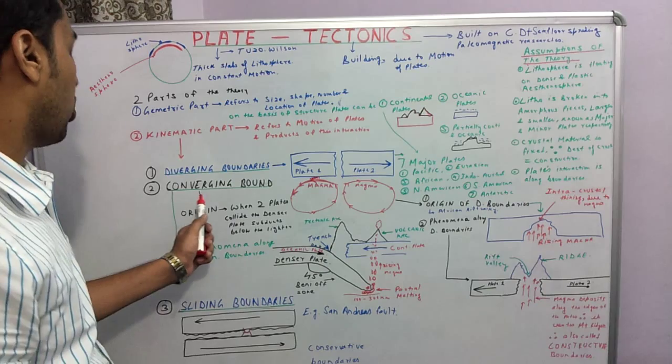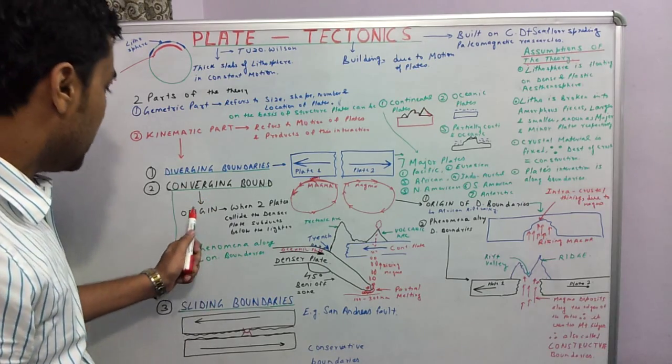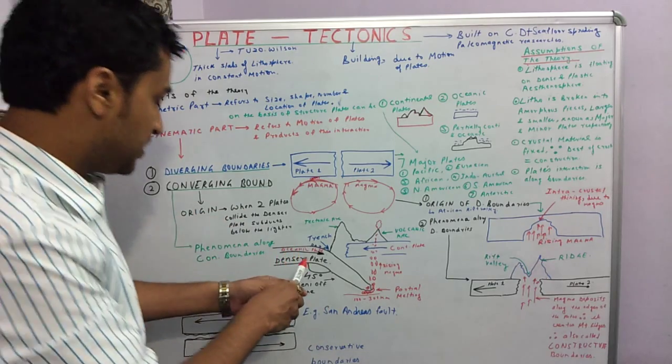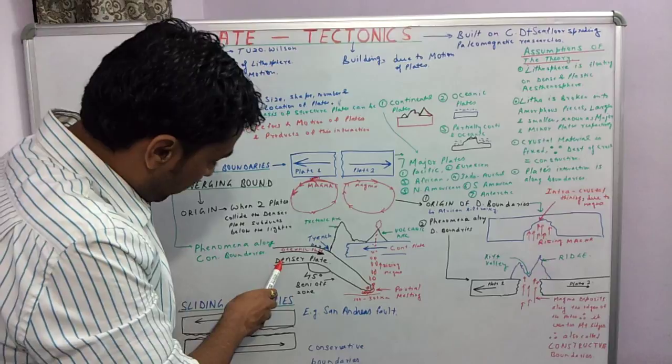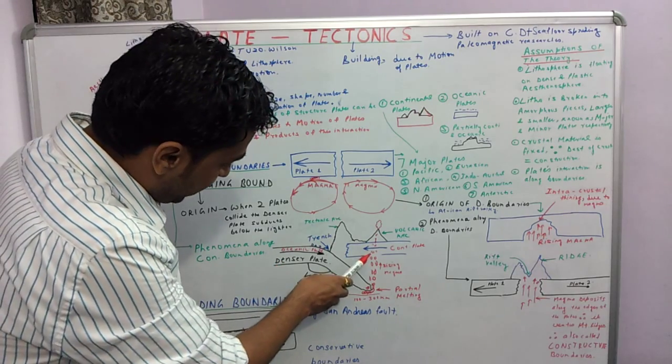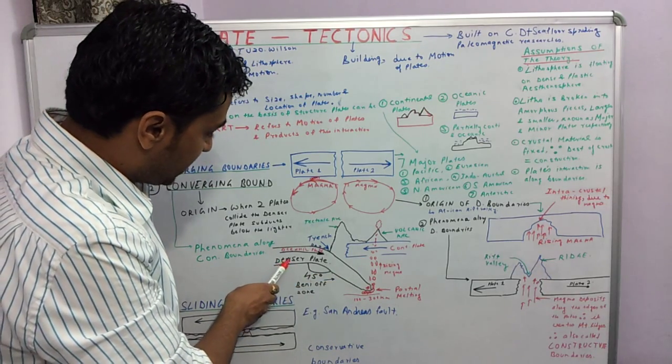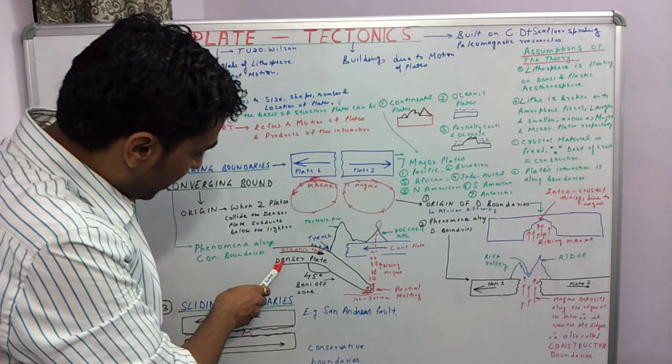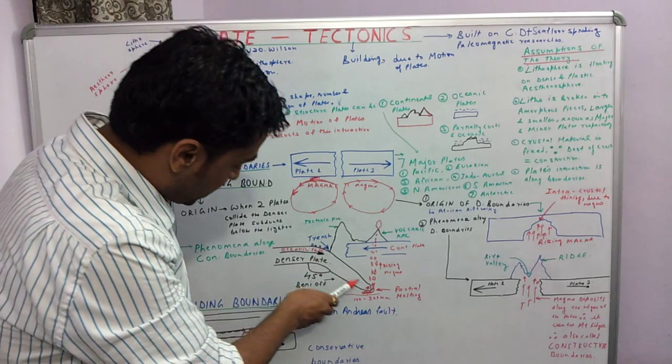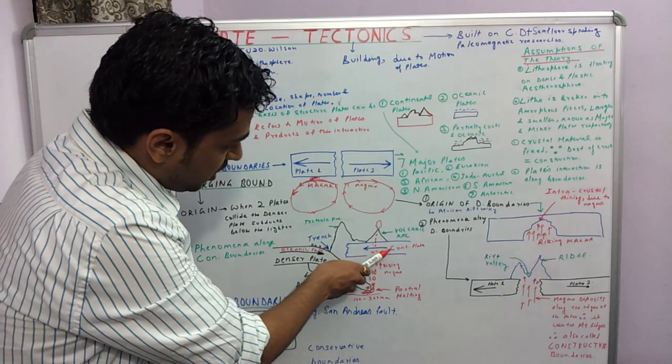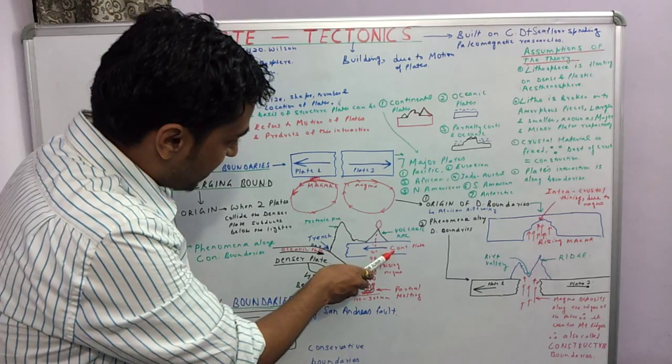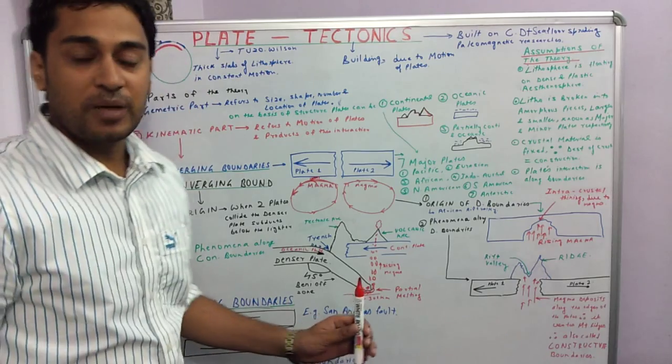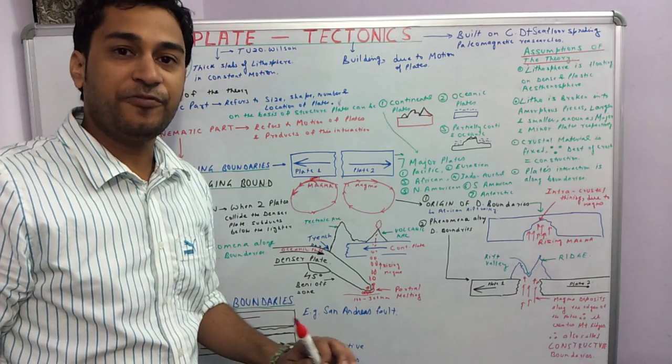Now we will come to the converging plate boundaries. The converging plate boundaries originate when two plates collide. We can see in the diagram two plates have collided. One is a denser plate and the other is a lighter plate. Usually the oceanic plate is the denser plate and the continental plate is the lighter plate. On account of being denser, the oceanic plate goes down whereas the continental plate stays up. When it reaches a depth of about 100 to 300 kilometers, something called partial melting and differentiation happens.